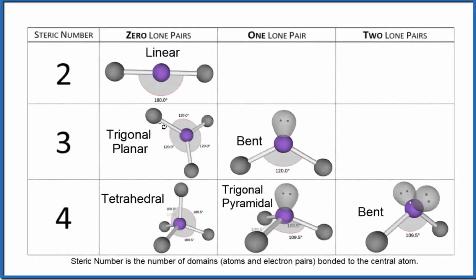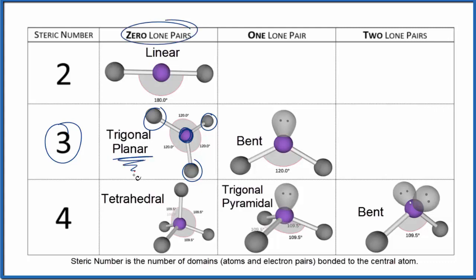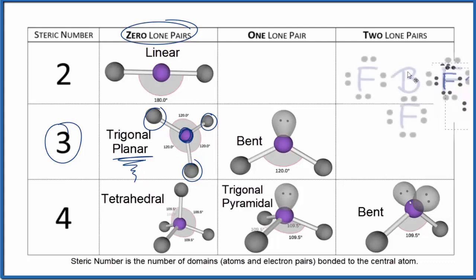Let's take a look at the trigonal planar molecular geometry, also called molecular shape. If we have a steric number of three — that's one, two, three things attached to our central atom — and zero lone pairs, that's going to give us this trigonal planar molecular geometry. A really good example is BF3.